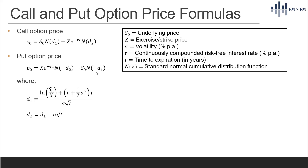We also have this function N here. N(x) is the standard normal cumulative distribution function. This is the formula for the call option price and the put option price.